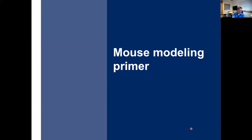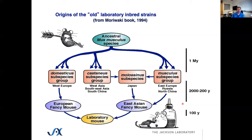As a quick primer: laboratory mice are actually a mix of four different subspecies that diverged approximately a million years ago across the globe. The key ones are Mus musculus domesticus, the most common in Western Europe, and Mus musculus musculus, primarily located in Eastern Europe, Russia, and Northern China. There's also contribution from both the Castaneus and Molossinus subspecies as well.